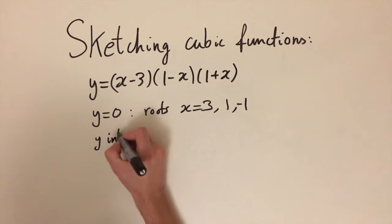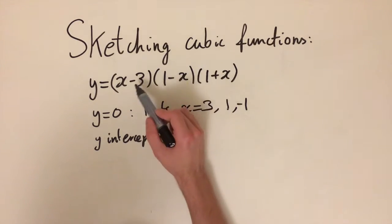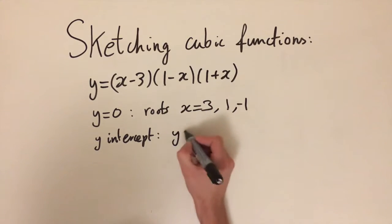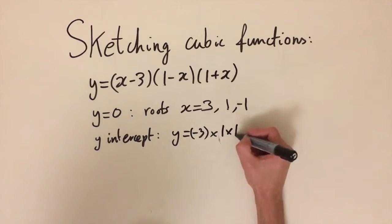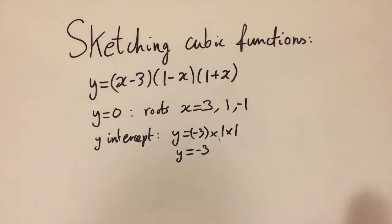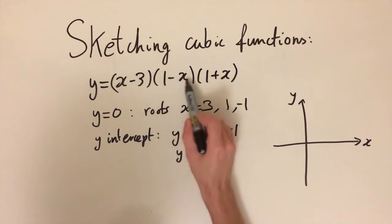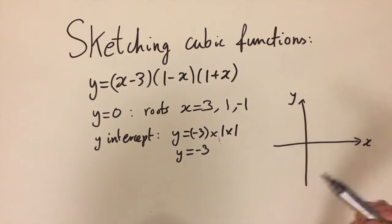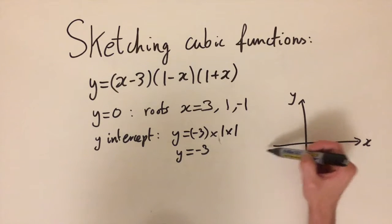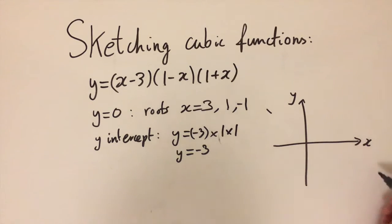We can also work out the y-intercept by substituting x equals zero, giving us the constants all multiplied together: y equals minus three times one times one times one, which equals minus three. Now we have to observe that we have a negative x in the factorization, so if we expand everything out we get a negative x cubed term. This means when x is really negative y is going to be positive, and when x is really big y is going to be negative.